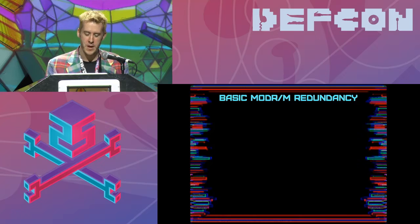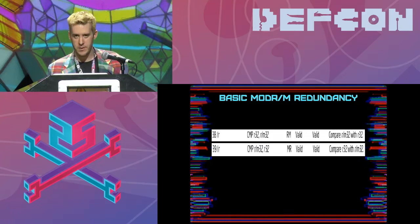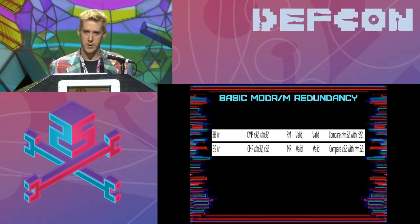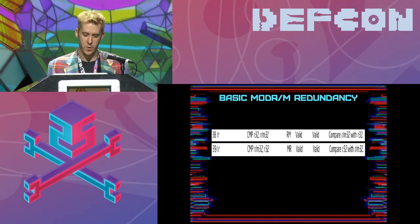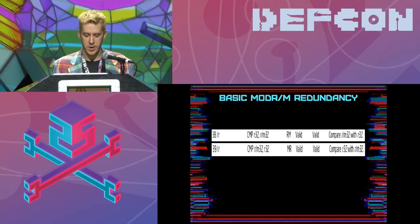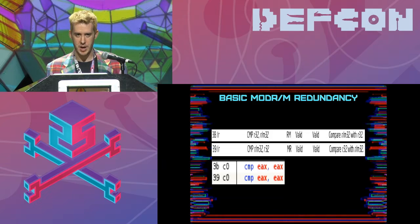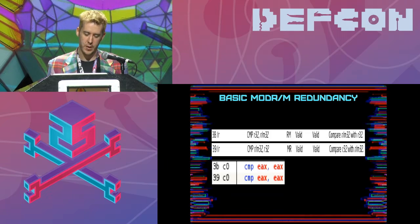Another basic redundancy is the ModRM redundancy. With instructions like MOV or logical operators, you cannot do a memory-to-memory operation — only register-to-register, register-to-memory, or memory-to-register. So they have to include two different encodings. For COMPARE: 3B is the encoding for moving a register or a pointer into a register, and 39 is moving just a register into either a register or a pointer. Because a register can be encoded in both, you get a redundancy. This is actually the exact type of redundancy in the screenshot before with the toy exploitable program — that's why that worked: because of this redundancy.